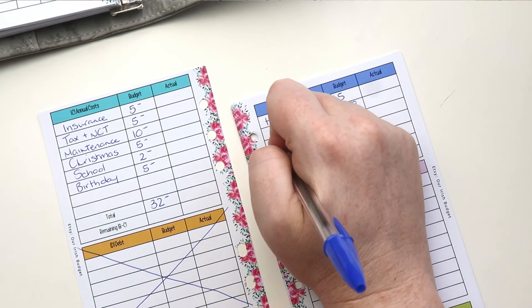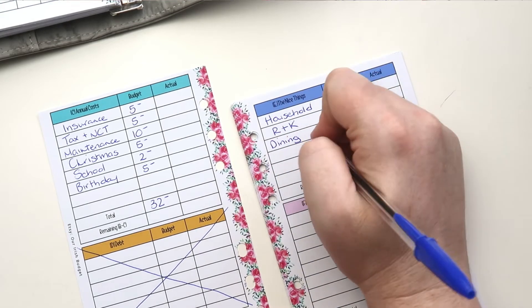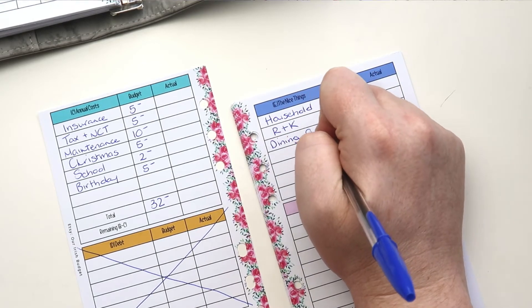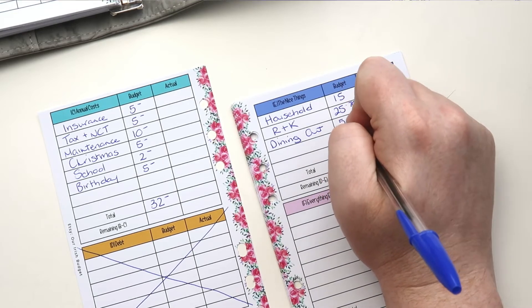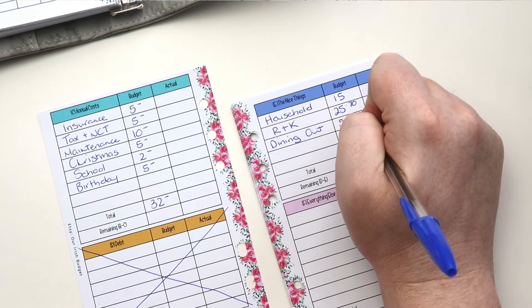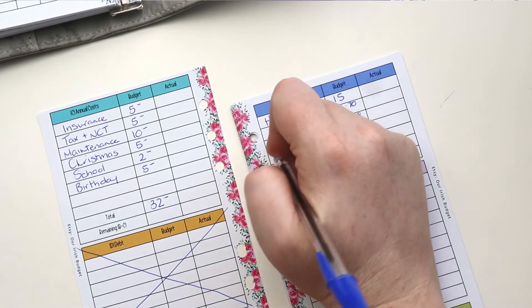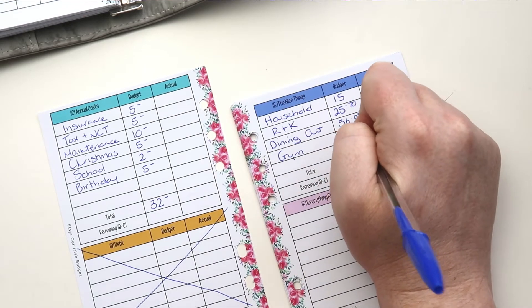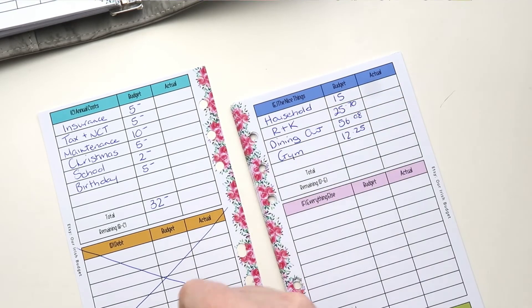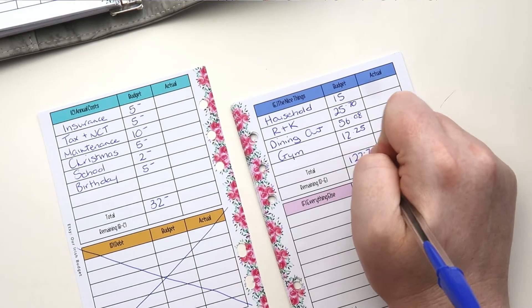Dining out was definitely an area last week that we overspent. We overspent a lot, by 50 something euro. So we're going to put 56.08 in there and that should cover it. Then we have the gym. And it's 12.25. So when you add all of the nice things up together, you get 122 euros, 79 cent.